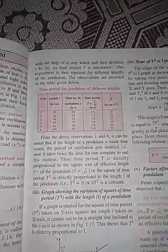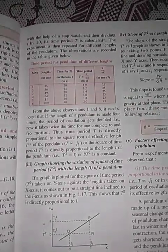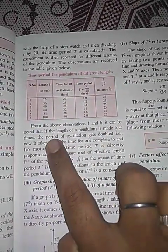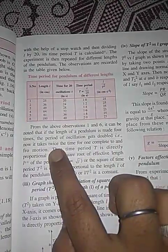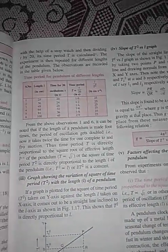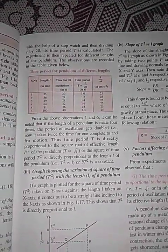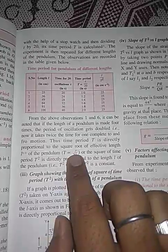With different values we calculate the time period of the simple pendulum. From the observations, when the length of the pendulum is four times, the time period of the oscillation gets doubled — it takes twice the time for one complete to and fro motion. This gives the relation: T is directly proportional to the square root of length (T ∝ √L).